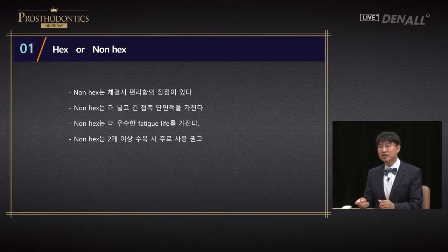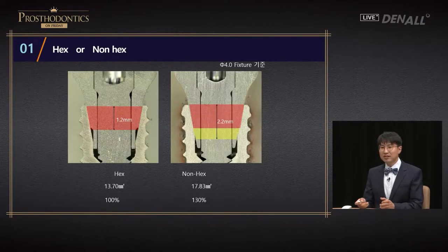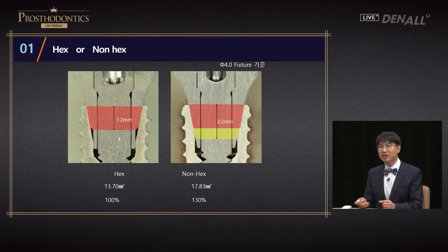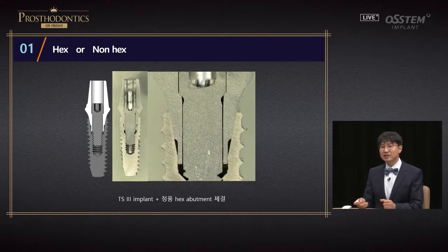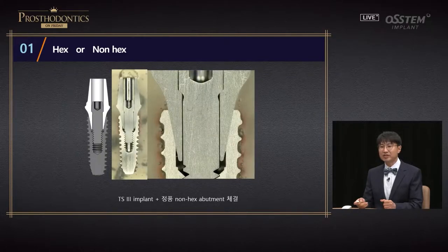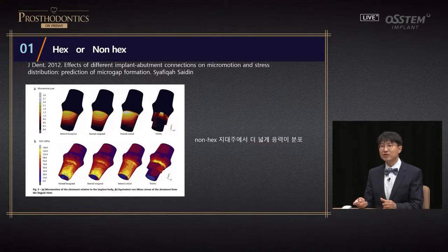In the case of non-hex, it is recommended to use it in cases of two or more. For hex type, there is a 10 micrometer gap. Because non-hex has a wider contact surface, non-hex has more fatigue life. Let's look at the difference with non-hex abutment. If you look at the literature, non-hex is known to be more favorable in terms of stress distribution compared with hex, because it has a wide contact surface. And I agree.